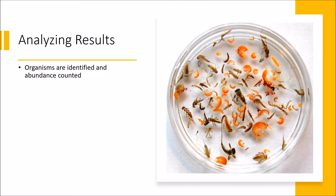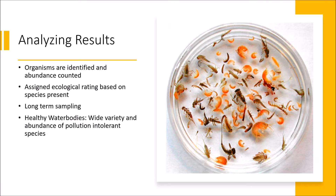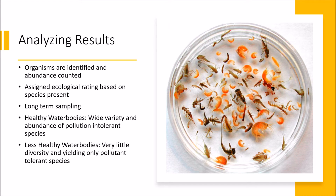After sampling is completed and all organisms are identified and sorted by species, simple calculations based on what macroinvertebrates were present and their abundance are made. An ecological rating is then assigned to the stream that estimates the status of water quality. Repeated sampling can give insight into long-term trends in water quality based on the changes of macroinvertebrate communities. In general, water bodies in healthy conditions support a wide variety and high number of macroinvertebrates, including many that are intolerant of pollution. Samples yielding only pollution-tolerant species or very little diversity or abundance may indicate a less healthy water body.